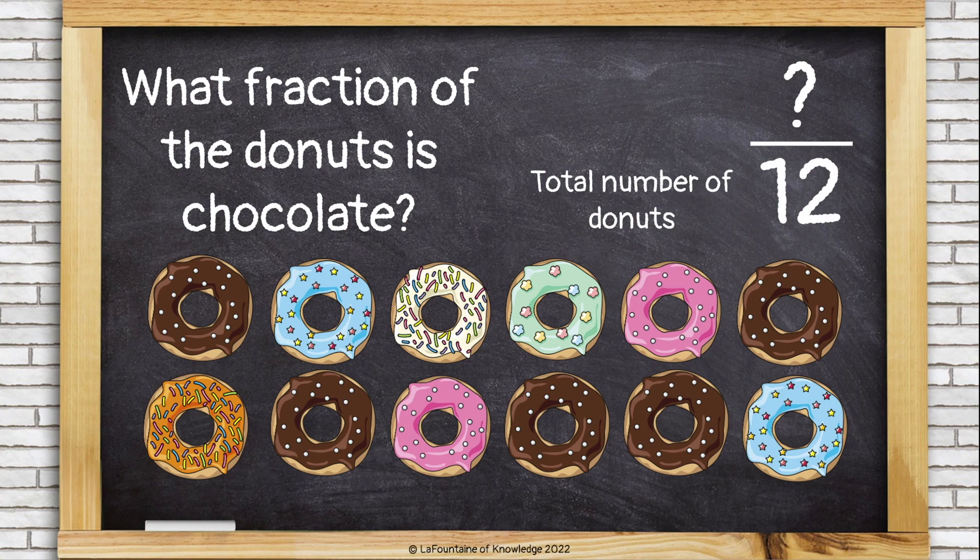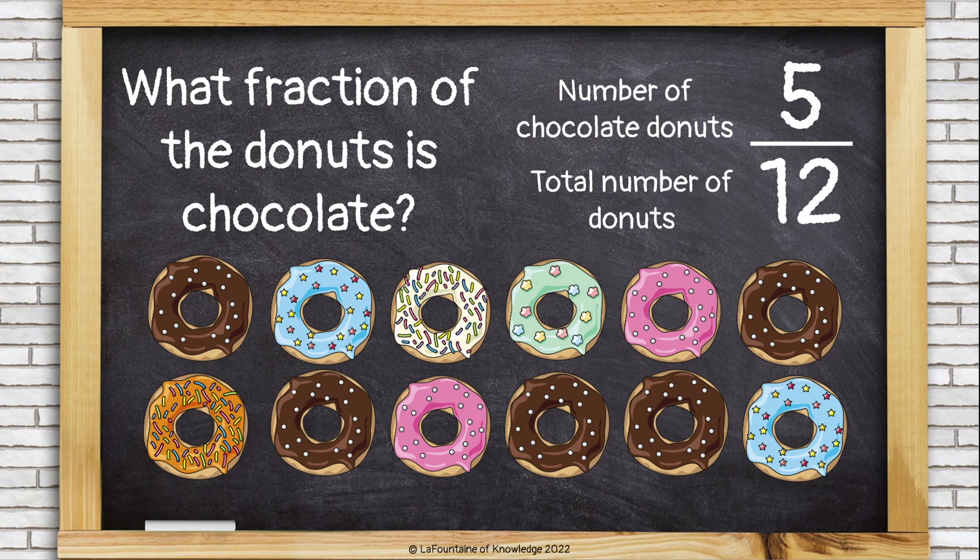Then we need to think about the numerator, which would be the number of chocolate doughnuts. I have five chocolate doughnuts, so five out of 12, or five twelfths of these doughnuts are chocolate.